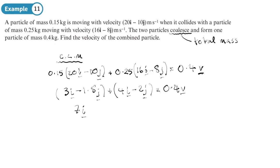Let's work out what we get on the left. I'm going to work out the i's and add them together. So 0.15 times 20i gives me 3i. Then 0.15 times negative 10 gives me minus 1.5j. Then 0.25 times 16 is 4i, and 0.25 times negative 8 is minus 2j. That equals 0.4v. So if I divide both sides by 0.4, I will get v.